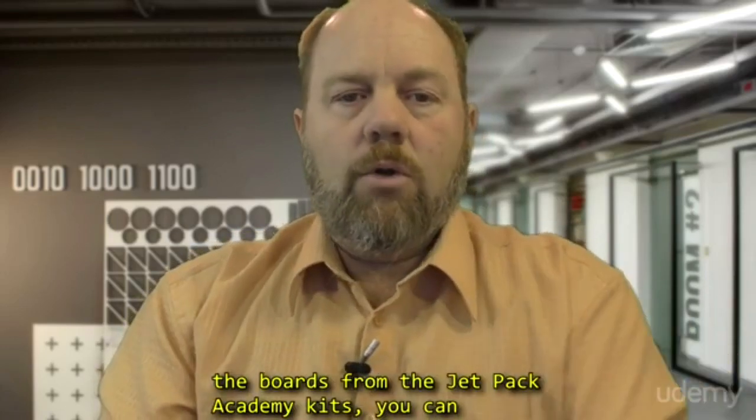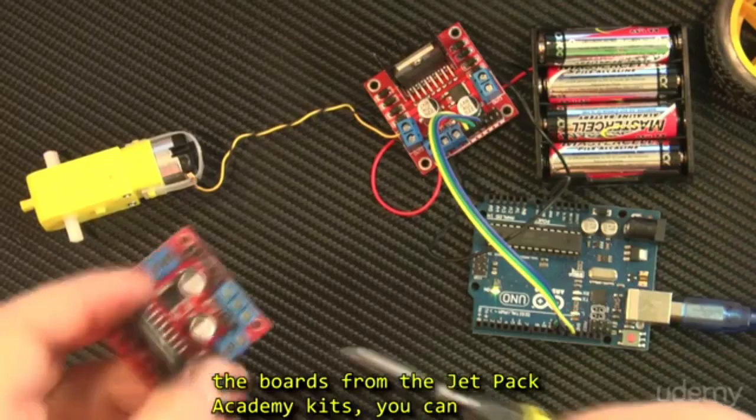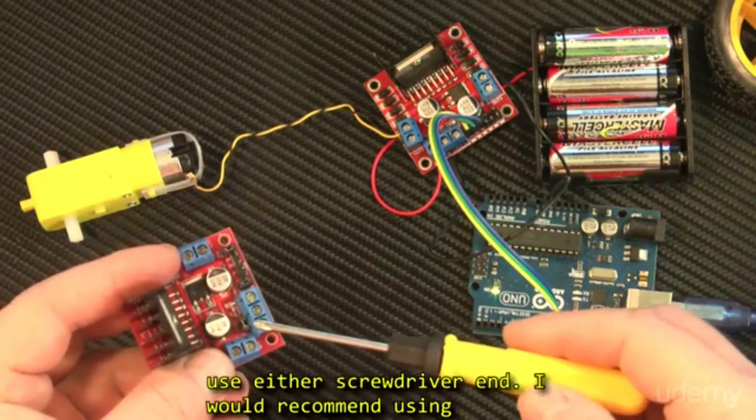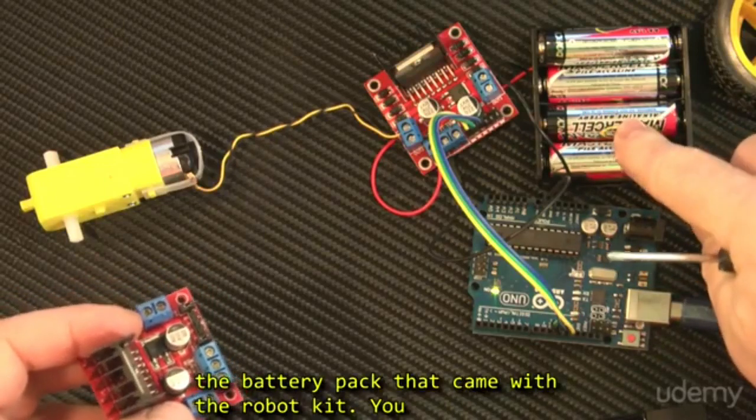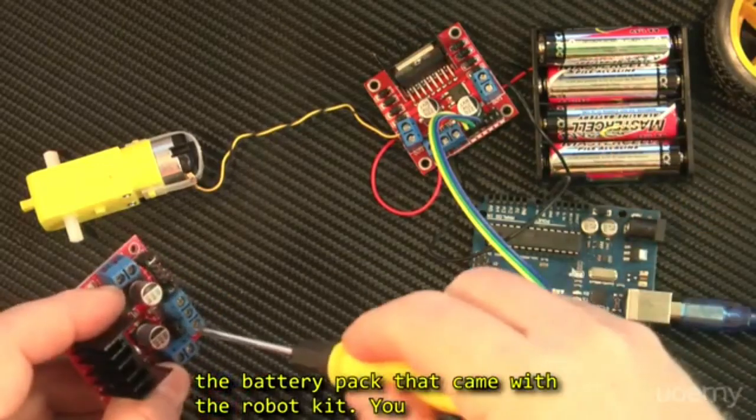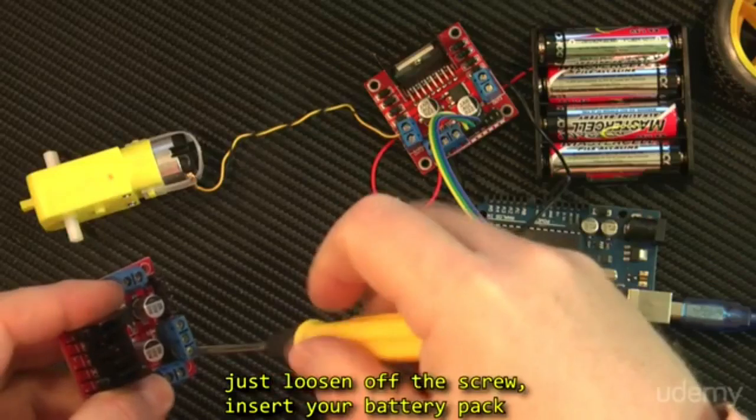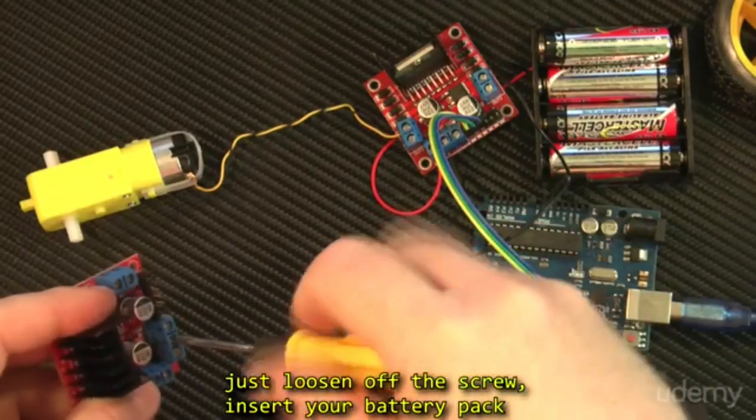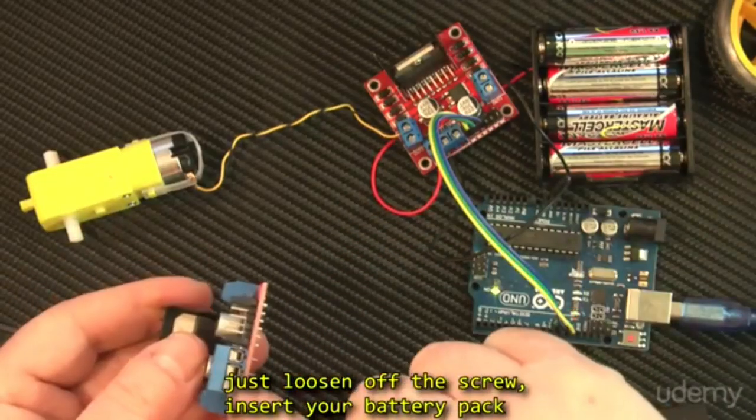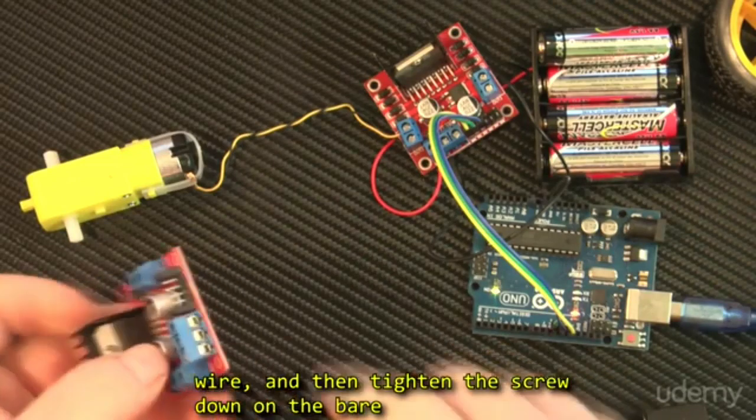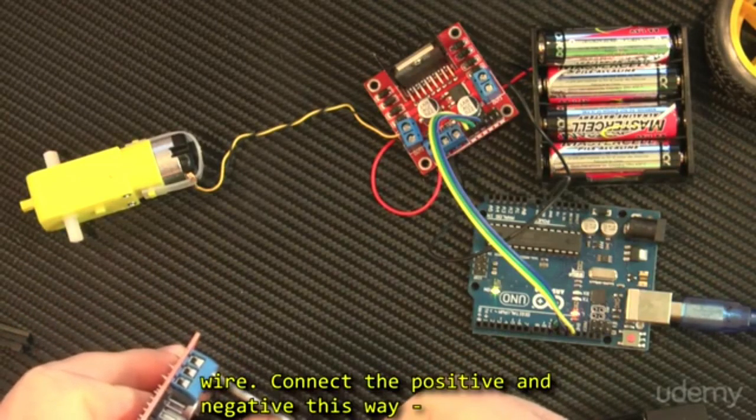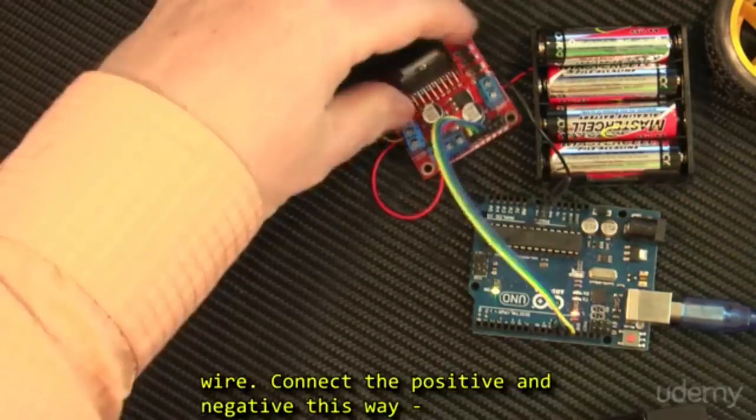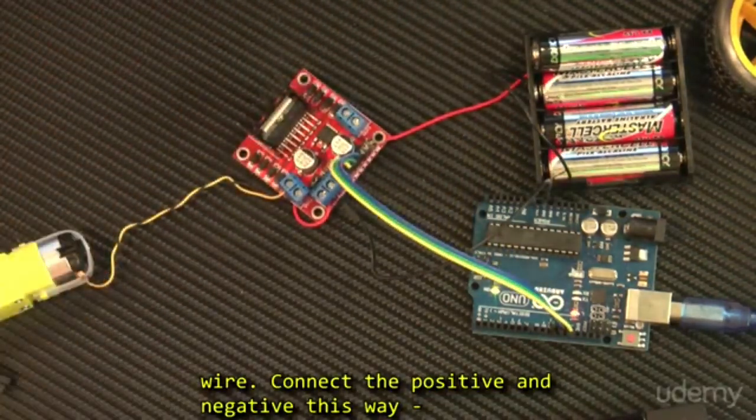So you may have to select the slot end depending on the board you got, but the boards from Jetpack, the Jetpack Academy kits, you can use either screwdriver, and I would recommend using the battery pack that came with the robot kit. So you just loosen off the screw, insert your battery pack wire, and then tighten the screw down onto the bare wire.